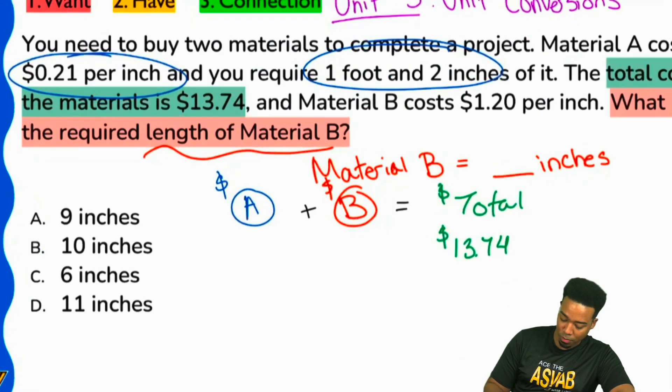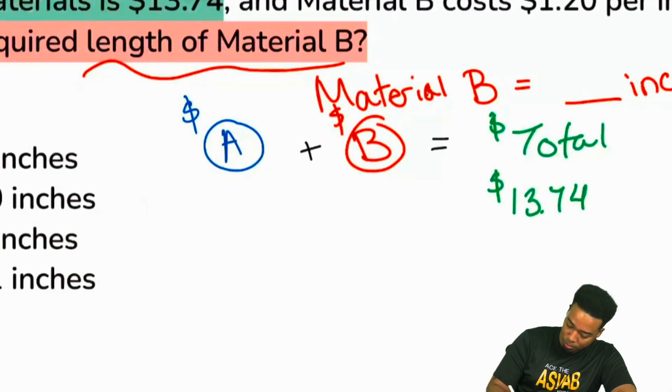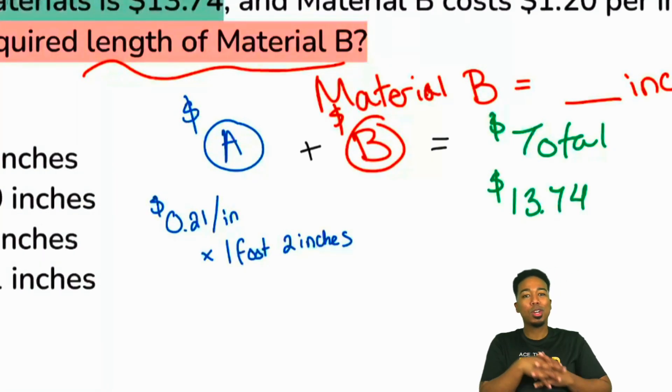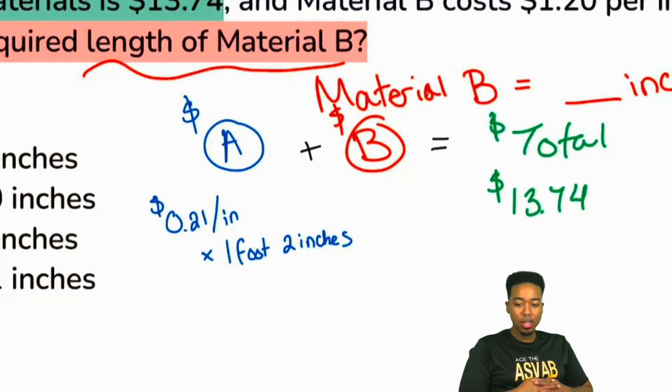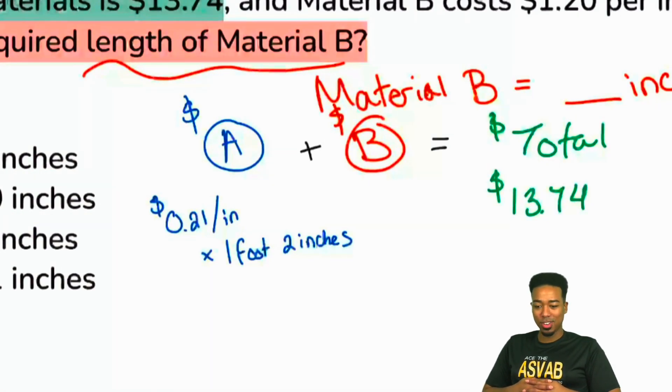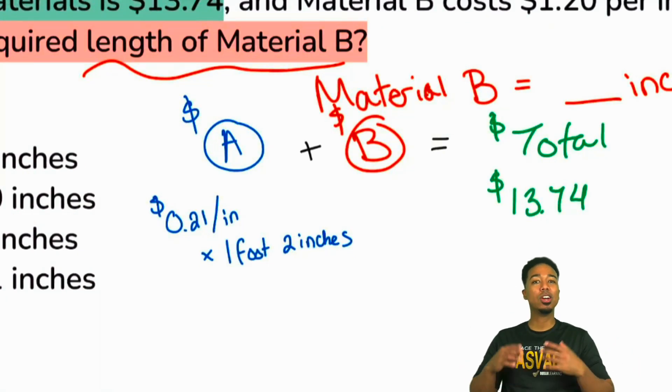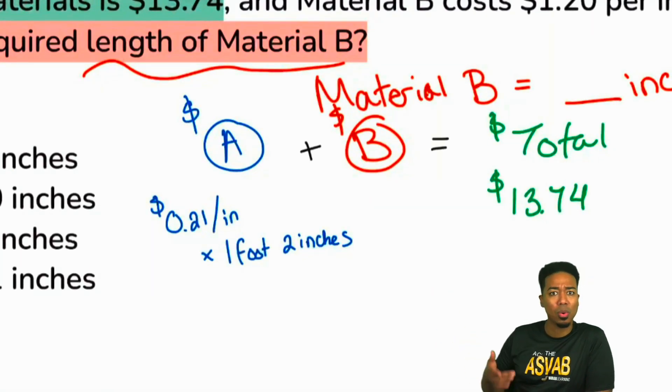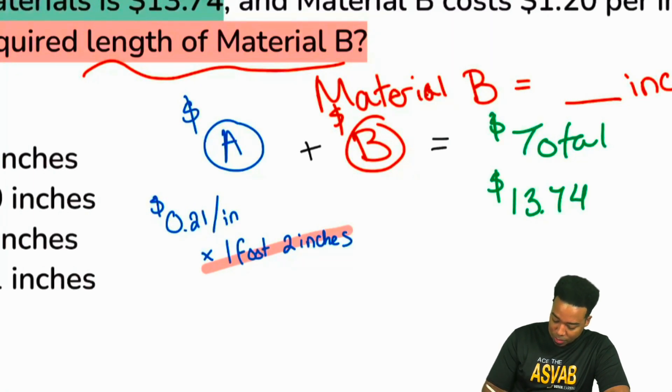Let me know if that makes sense. We can find the cost of material A and subtract it so we can just focus on B. Here we go. To find the cost of A, let me use a different color. We have $0.21 per inch and we need to multiply this by one foot two inches. My party people, what's the problem with that? $0.21 per inch times one foot two inches. What is the problem with that? Right, that's right, Nick. We are not dealing with the appropriate units.